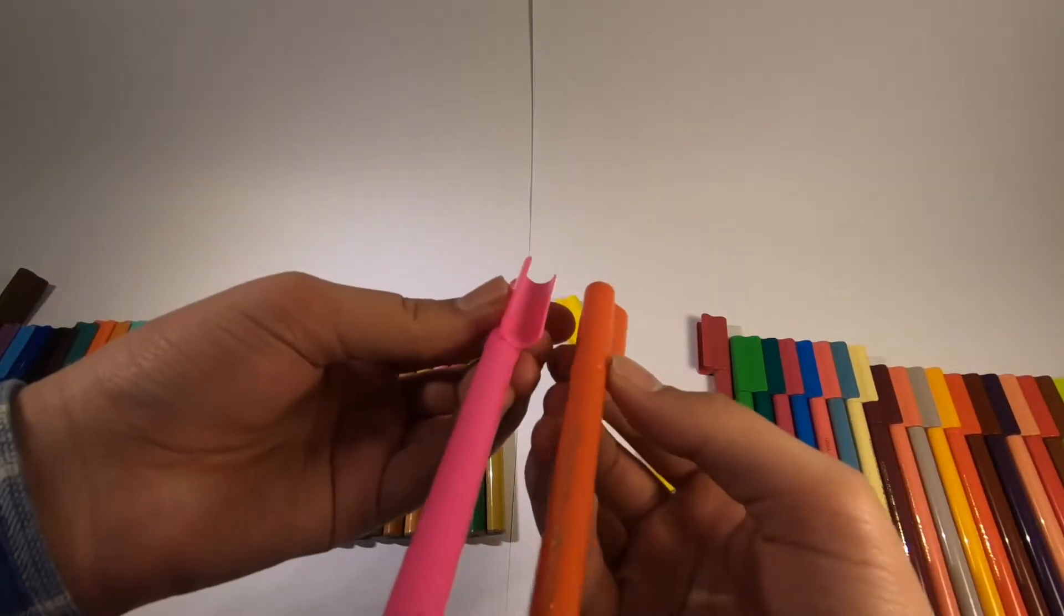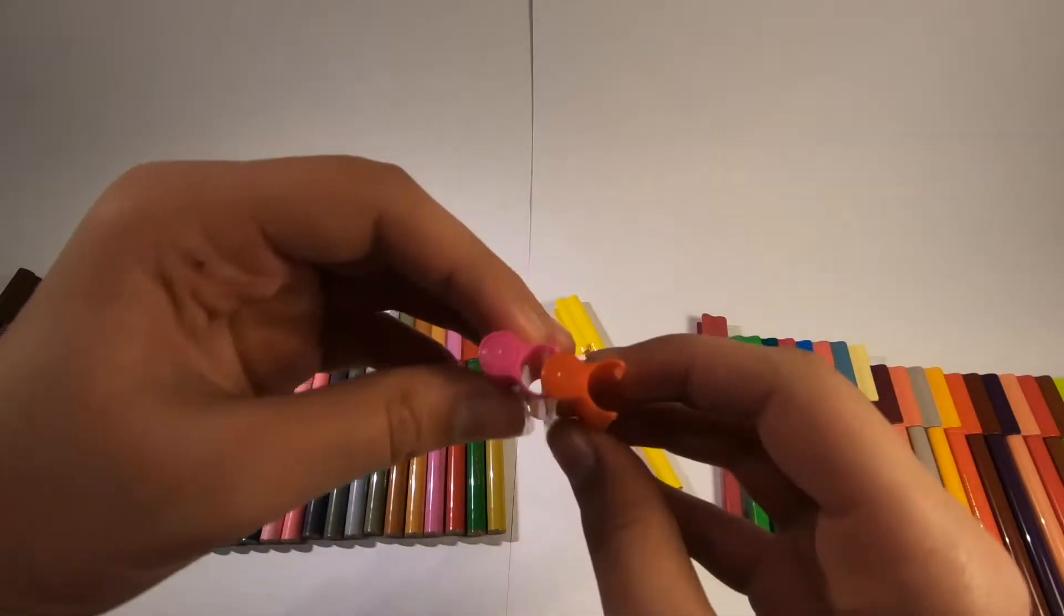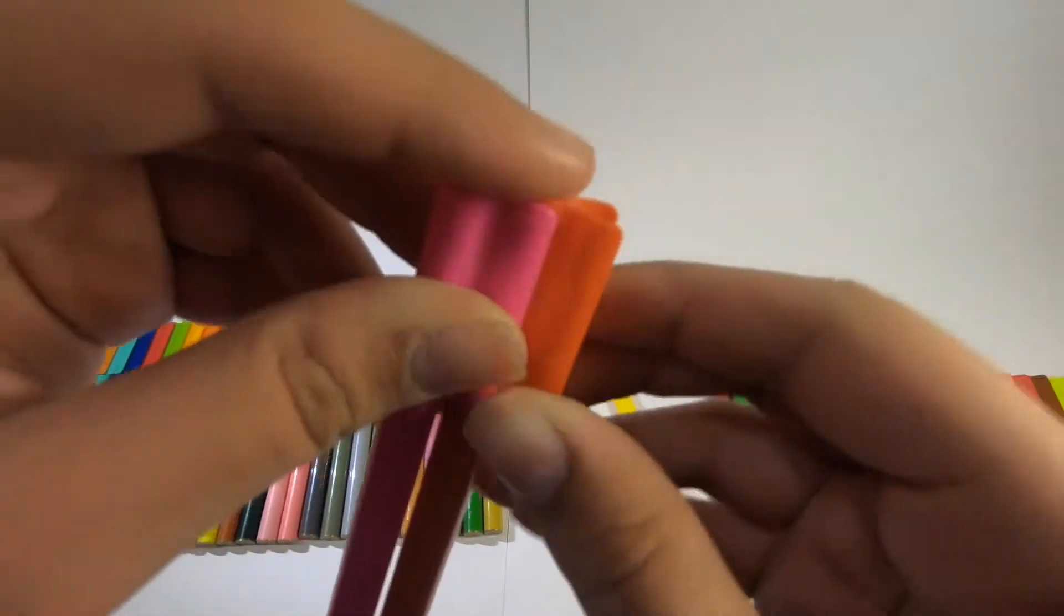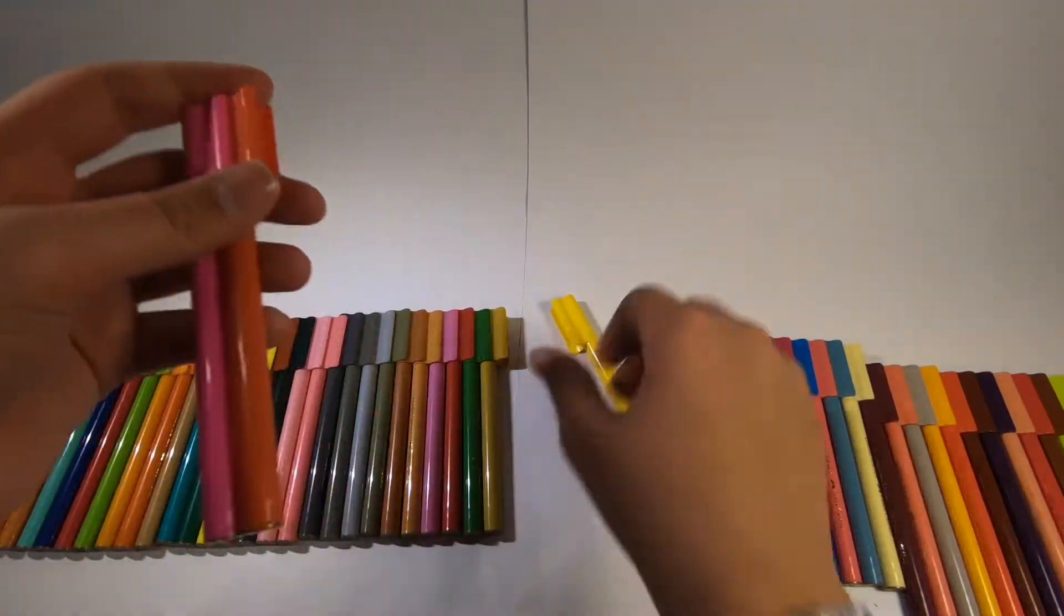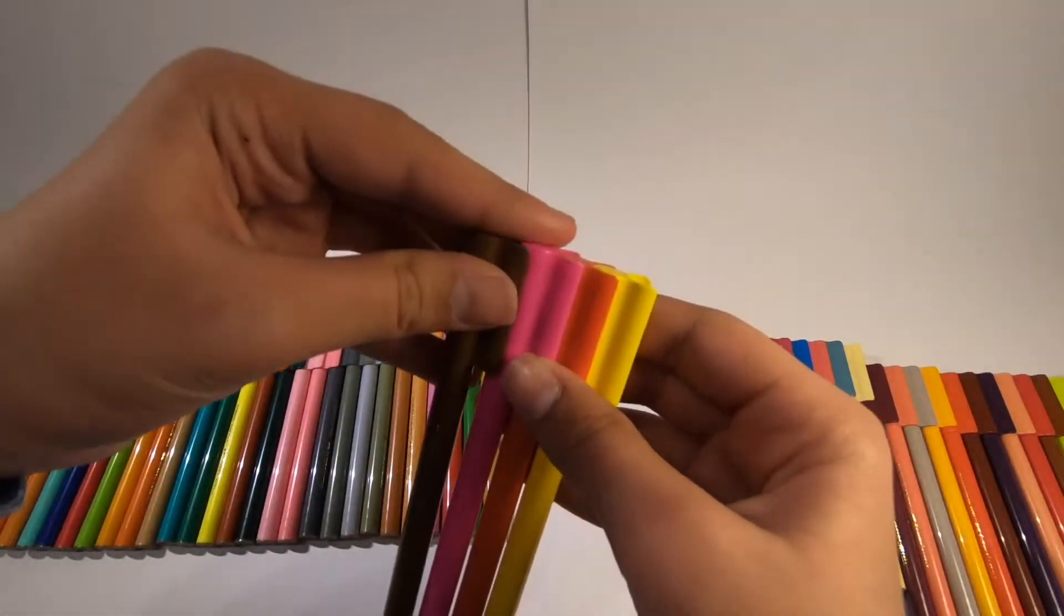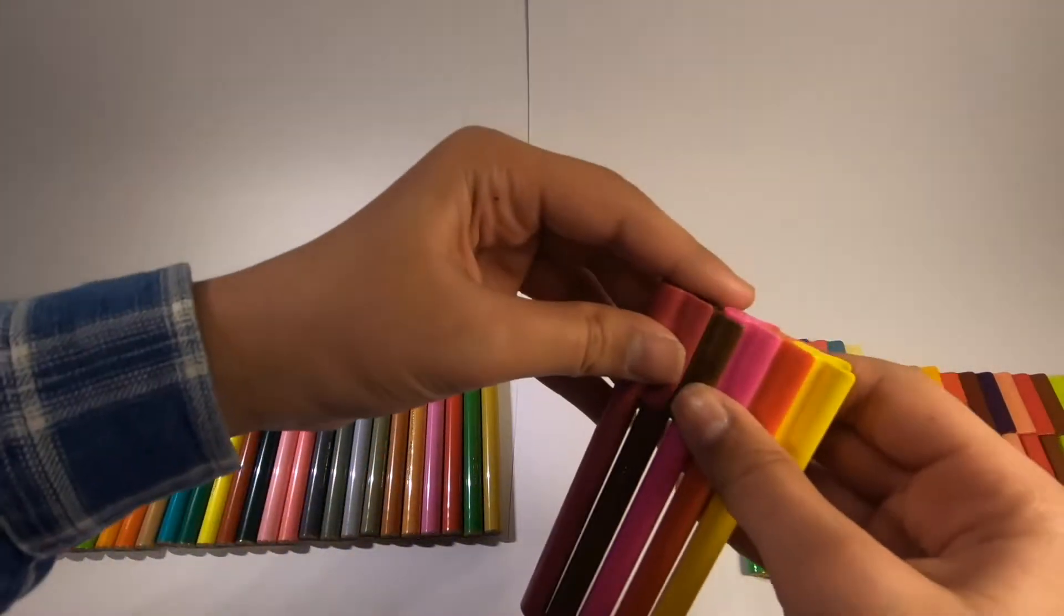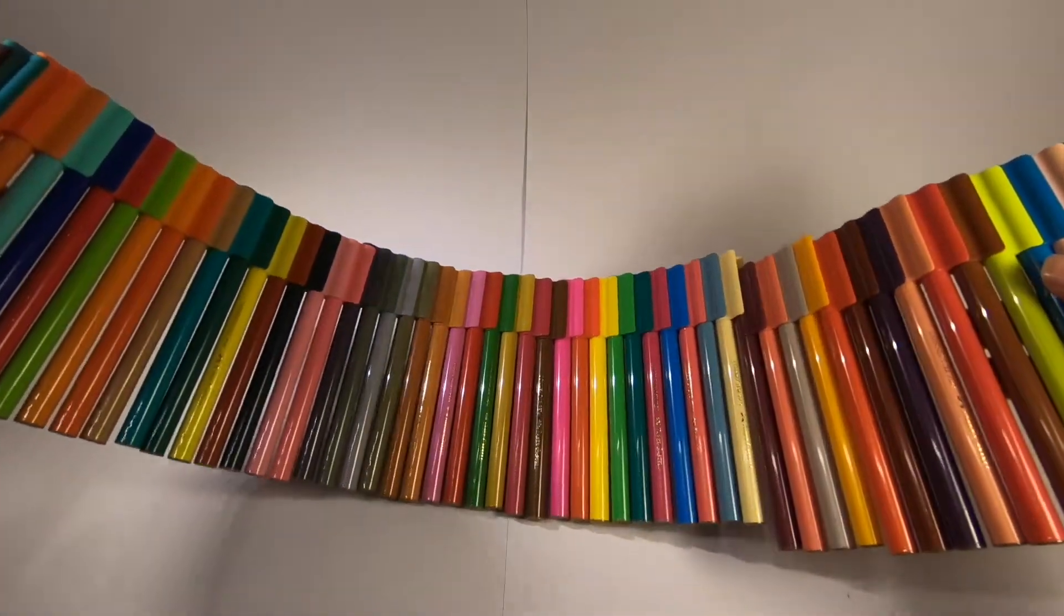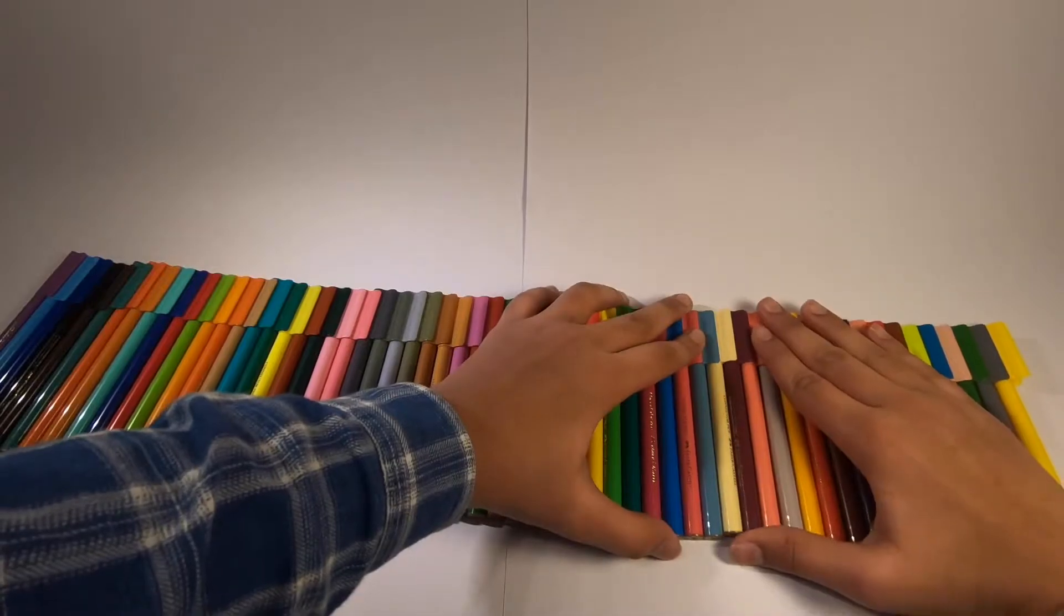But you can also do two markers like this here. You see you just clip it on like this and there it is. And not only two markers, you can do three, you can do four, you can do five, and keep doing on and on and on until you find yourself with a brick mat. This mat looks quite nice.